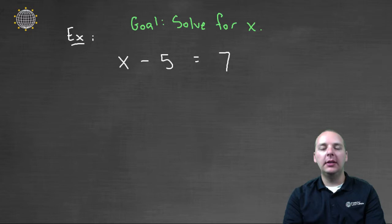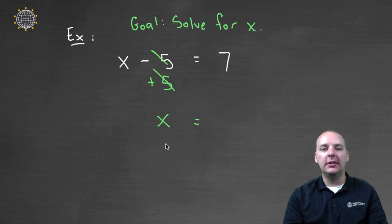and I sure would love for that minus five to go away. And so what we can do is we can add five to the left hand side. Because what is minus five plus five? Well zero. And so these would go away and we would only have an X on the left hand side once these guys cancelled.